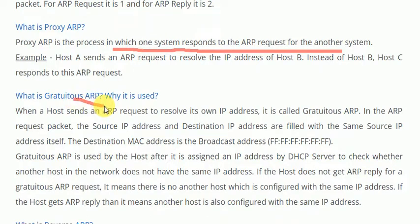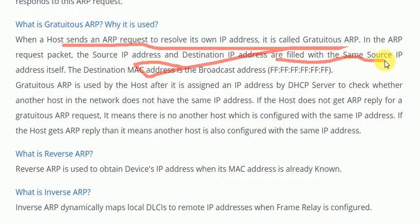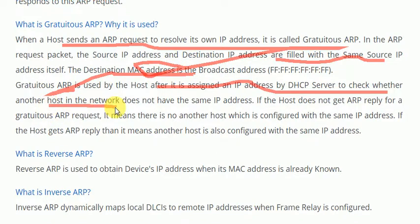What is gratuitous ARP? In layman's terms, gratuitous ARP occurs when a device is assigned an IP address and it wants to ensure that no other device on the network has the same IP address. When a host sends an ARP request to resolve its own IP address, it is called a gratuitous ARP request. In the gratuitous ARP request packet, the source IP address and the destination IP address are both filled with the source IP address itself, and the destination MAC is the broadcast address.